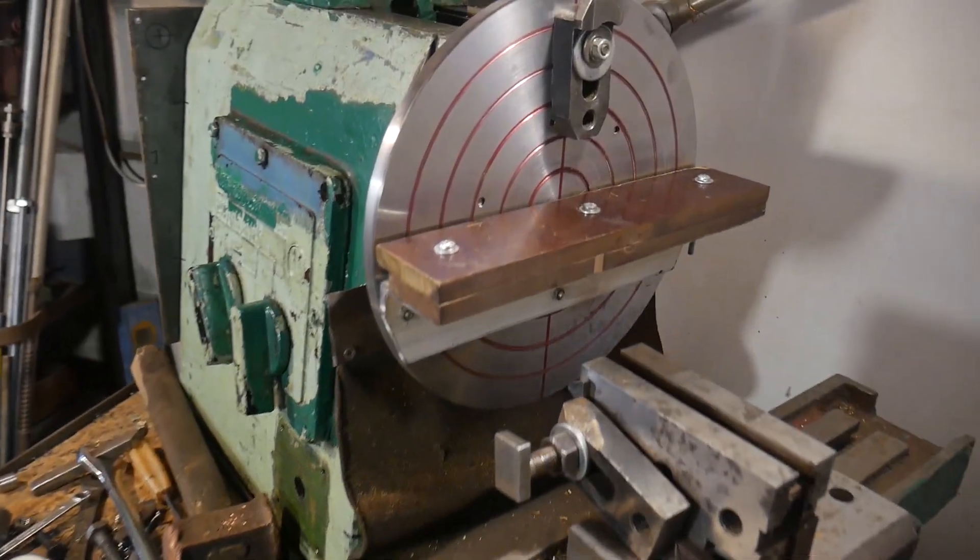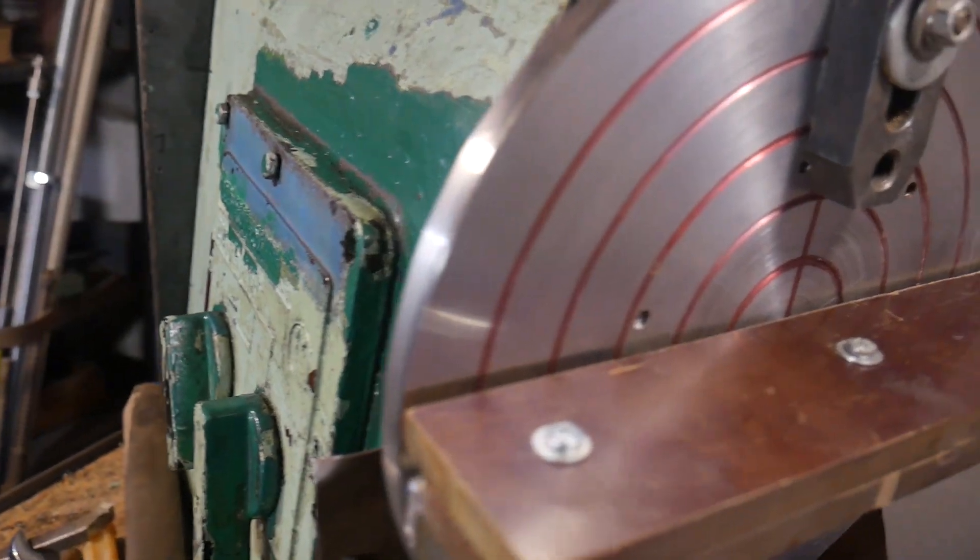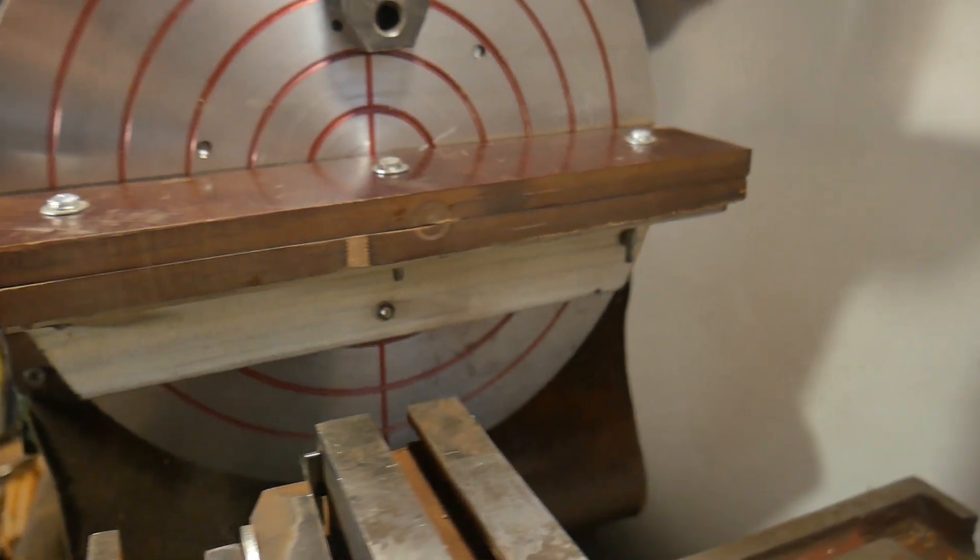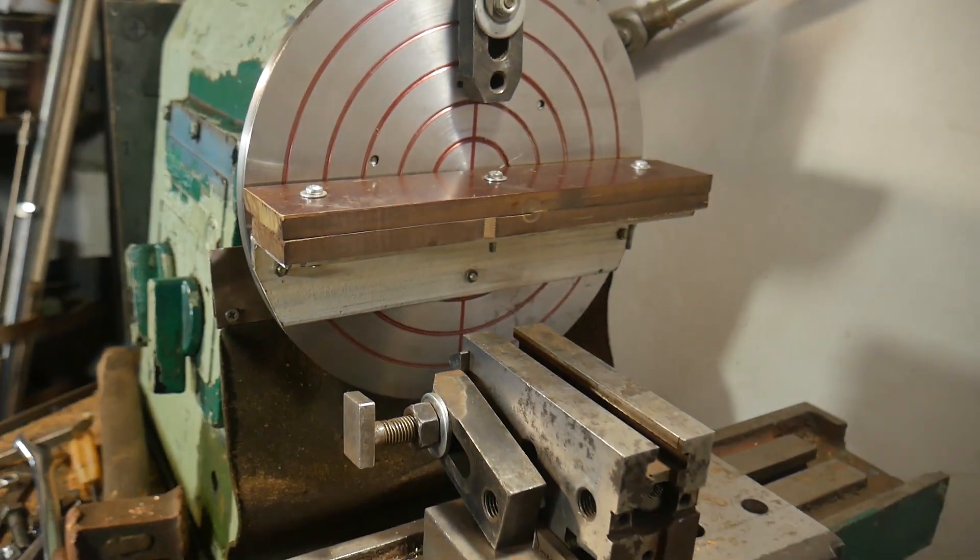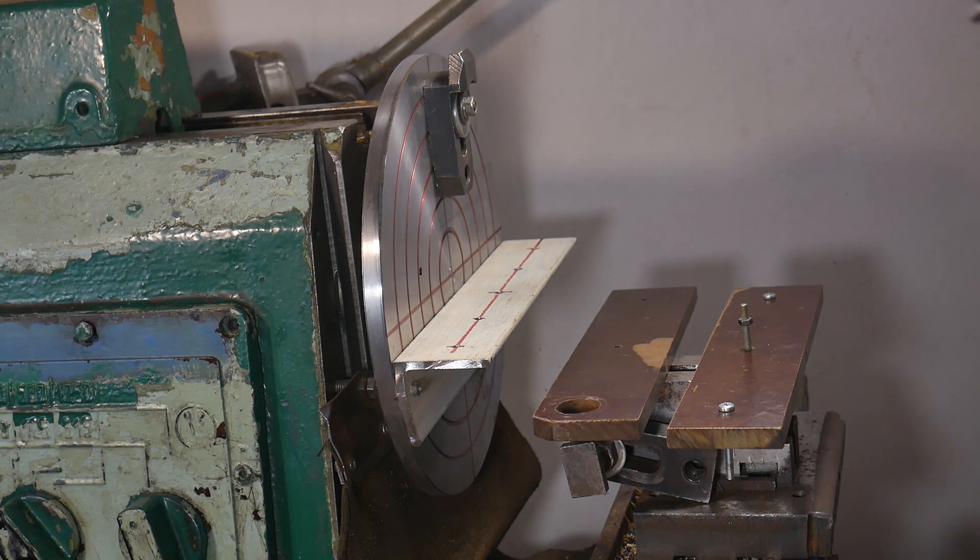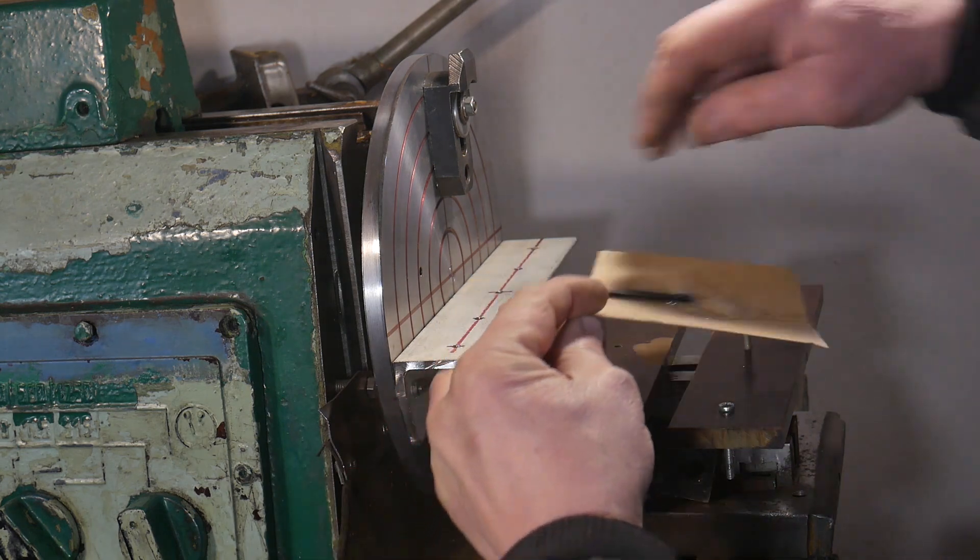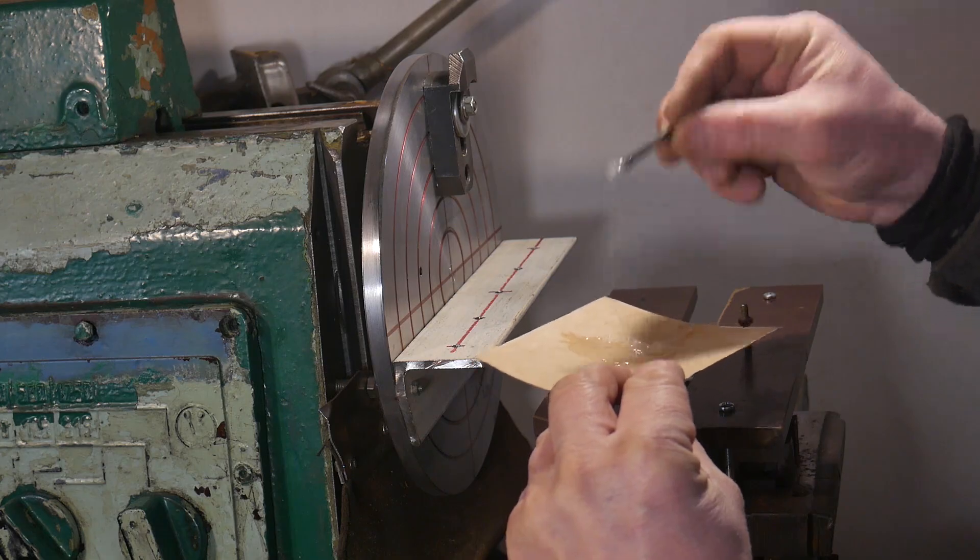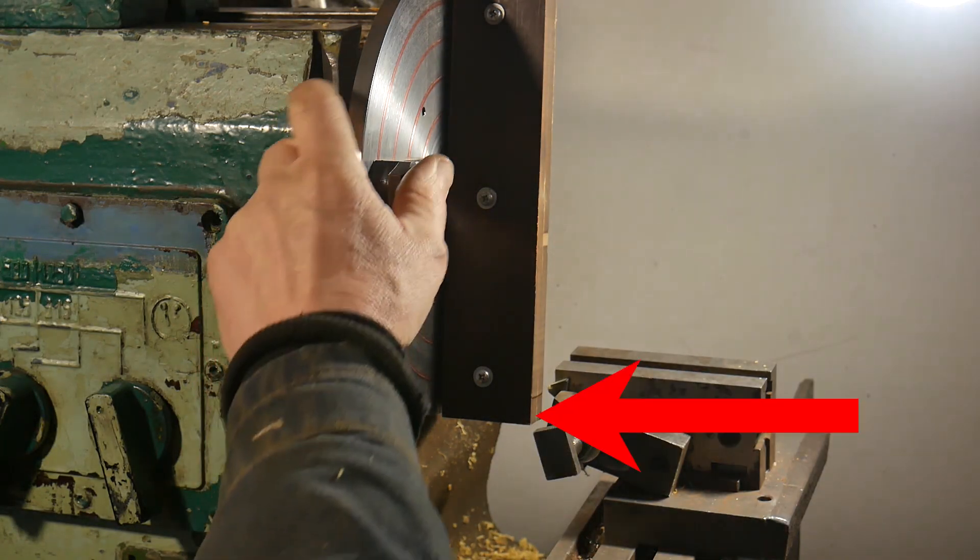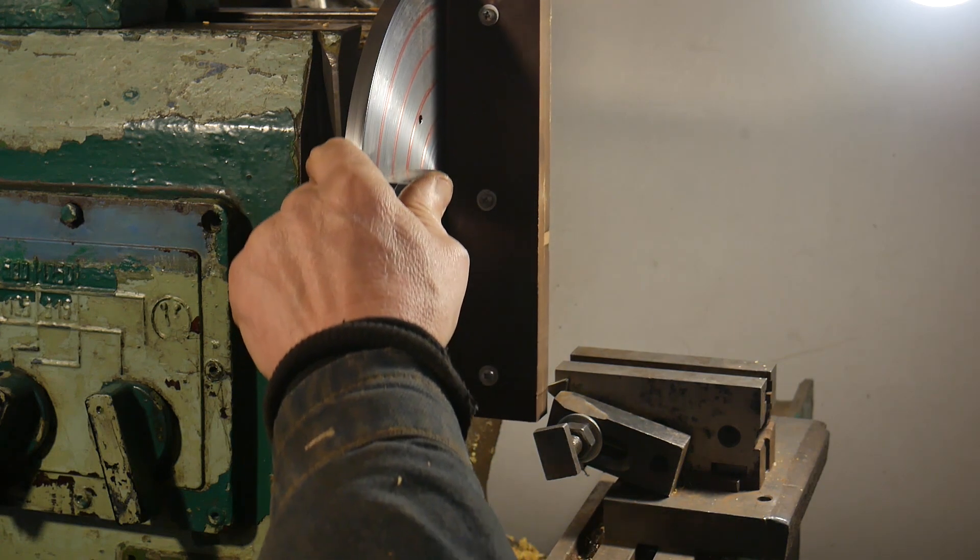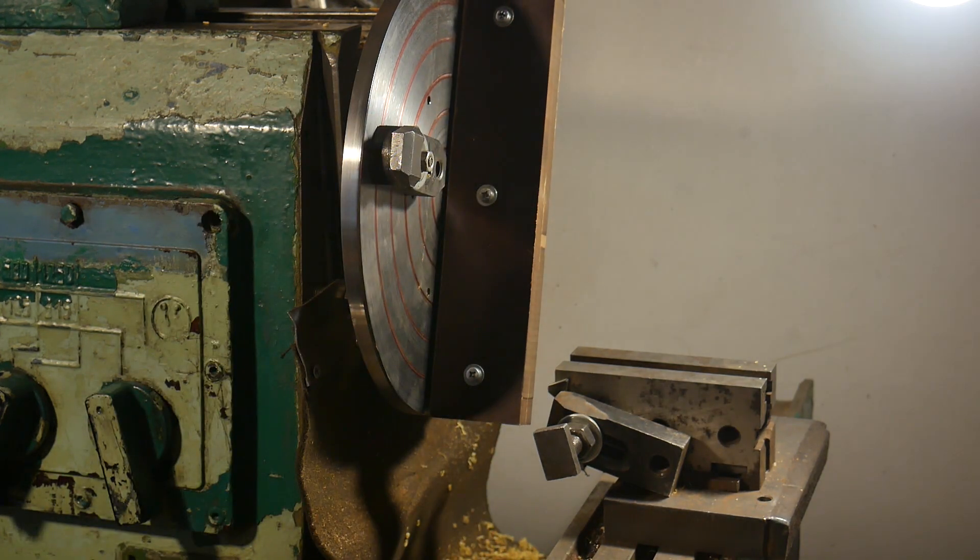To do this, a faceplate was installed on the spindle. A workpiece made of getting axe was installed on the faceplate. The workpiece consisted of two identical pieces that were glued together. A cutter was installed and the workpieces were machined by moving along the Z axis.